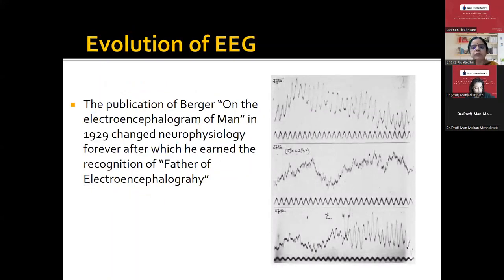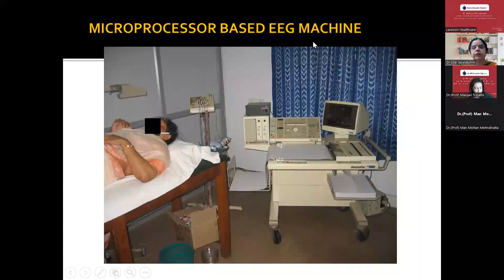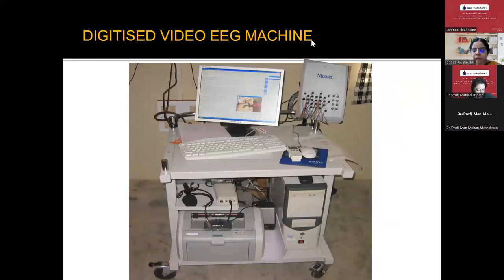As we already heard about the evolution of EEG — when you see the time of Berger in 1929, the recordings are not very clear, with a lot of artifacts, and the recording system used to be very big. The electrodes used were needle electrodes at that time. But over the years we are using microprocessor-based EEG machines and then digitized video EEG machines, which are very comfortable — we can mobilize these units even to the bedside in ICUs. But still there are a lot of artifacts, and it's very important that unless the neurologist knows, you cannot supervise your technologists to do a good quality recording.